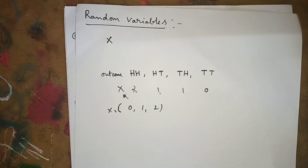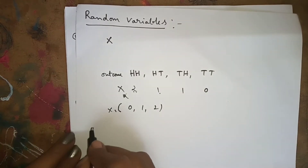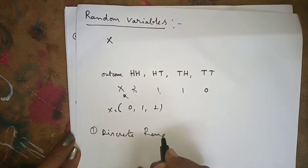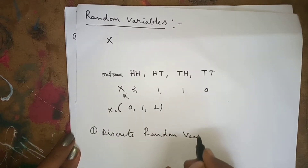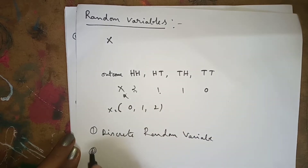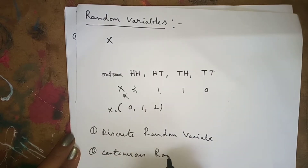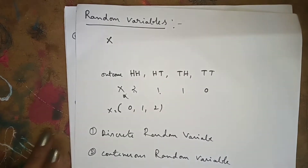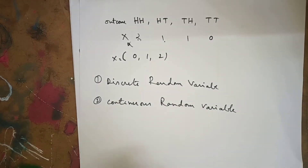There are two types of random variables. The first one is discrete random variable, and the second one is continuous random variable.